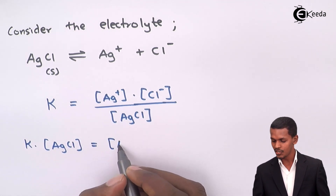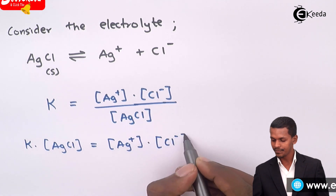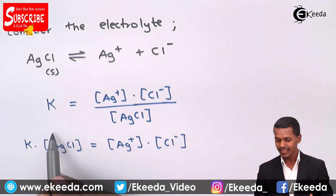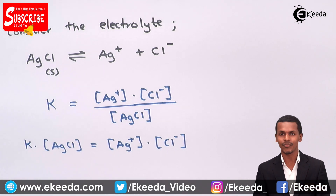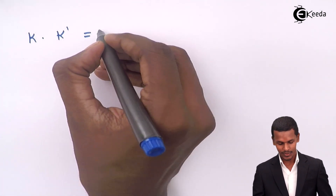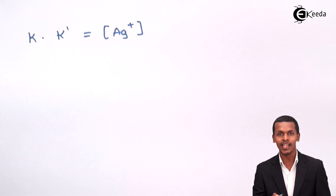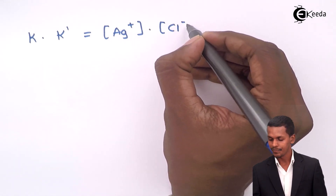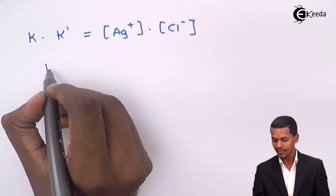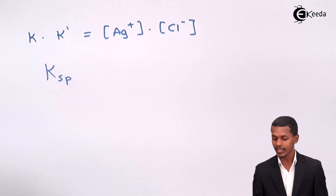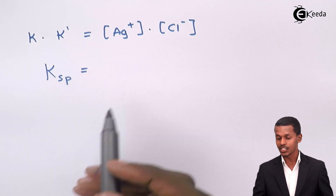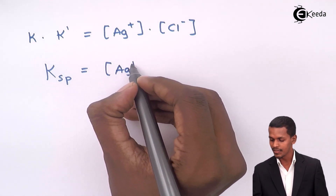Since AgCl is present in the solid phase, its concentration is itself a constant value. Therefore, K multiplied by that constant — K dash — equals the concentration of Ag⁺ times the concentration of Cl⁻. Multiplying a constant by another constant gives a constant, and that constant is nothing but the solubility product KSP, which is the product of the molar concentrations of the constituent ions of the electrolyte.